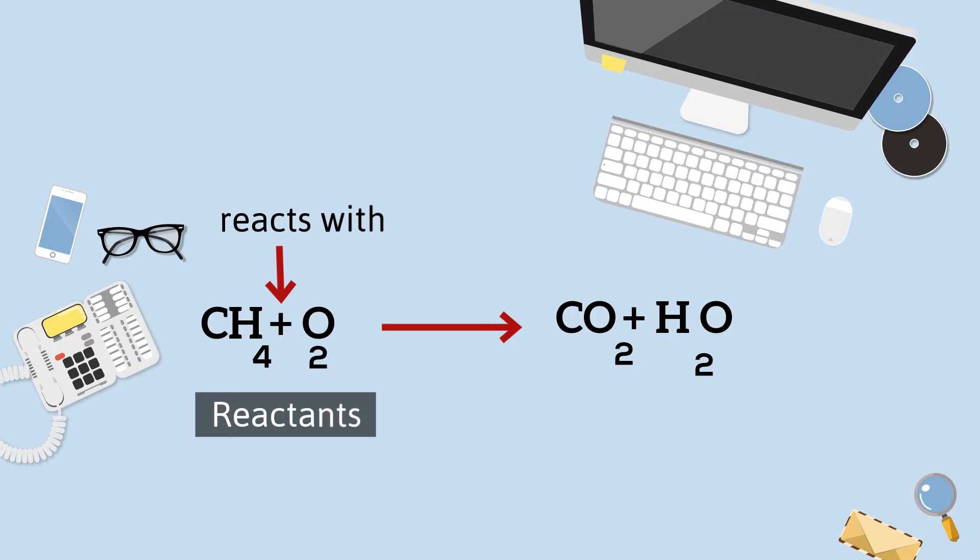The arrow tells us that it's going to produce, and then the right side are called your products, and it's going to make carbon dioxide. And then the plus sign on the product side tells you and, so it's carbon dioxide and water.